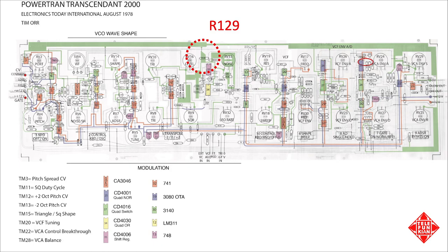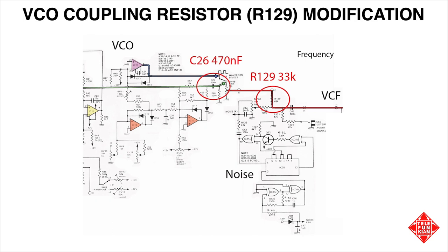This leaves us with the last of the three modifications suggested by Tony: reducing the value of R129, the resistor coupling the VCO to the VCF. All of the sound from the VCO passes through this resistor, so this might be a good candidate. Tony suggested replacing R129, specified as a 68k resistor in the original build, with a 33k resistor. In combination with Tony's other mods, this has given him good results. I'm just interested in boosting the signal from the VCO without damaging the OTAs in the filter — so how low can I go? Perhaps some experimentation is in order.